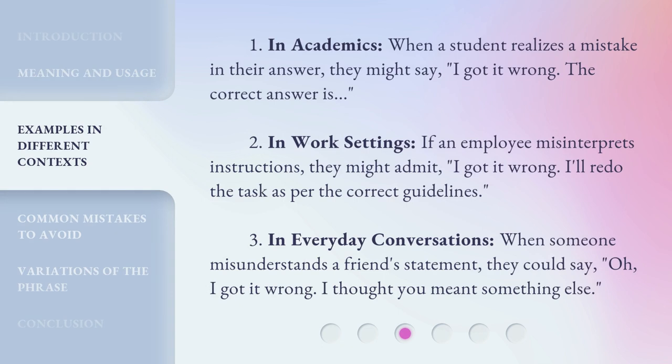1. In academics, when a student realizes a mistake in their answer, they might say, 'I got it wrong. The correct answer is...' 2. In work settings, if an employee misinterprets instructions, they might admit, 'I got it wrong.' 3. In everyday conversations, when someone misunderstands a friend's statement, they could say, 'Oh, I got it wrong. I thought you meant something else.'